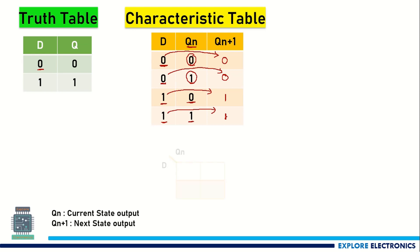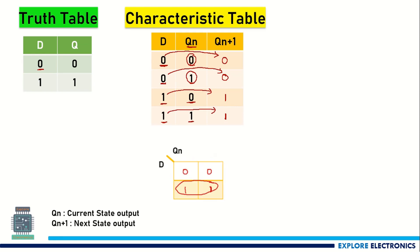Now we can write the expression for this. I am going to use a K-map for simplification. Plotting the values — 0, 1, 0, 1 for D and Qn — we have 1, 1 in two cells and 0, 0 in the others. Grouping the 1s, we get the Qn+1 expression as D itself. So directly, Qn+1 — that is the next state output — will depend on D input alone, irrespective of Qn. Qn+1 equals D is the characteristic equation.